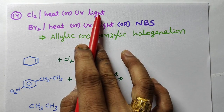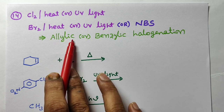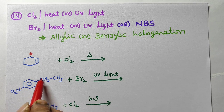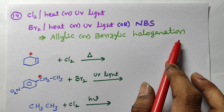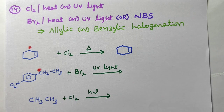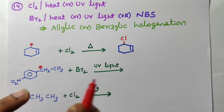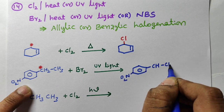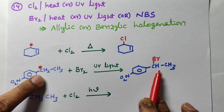Next: chlorine or bromine in the presence of heat or UV light, or N-bromosuccinimide (NBS) — these reagents cause allylic or benzylic halogenation. Allylic position is the SP3 carbon attached to the double bond; benzylic position is the SP3 carbon attached to the benzene ring. Halogen attacks at these positions. For example, cyclohexene undergoes allylic chlorination at the allylic position. For a benzene compound, NBS causes bromine to attack at the benzylic position.